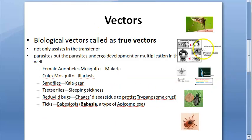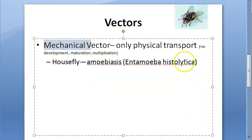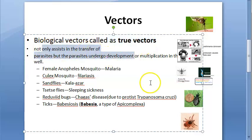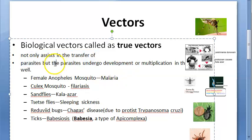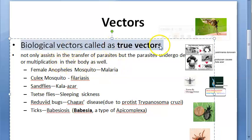There are two types of vectors: biological vectors and mechanical vectors. Biological vectors are called true vectors because they not only assist in the transfer of these parasites, they also help the parasite undergo development inside them or multiplication. That is why these are called true vectors.